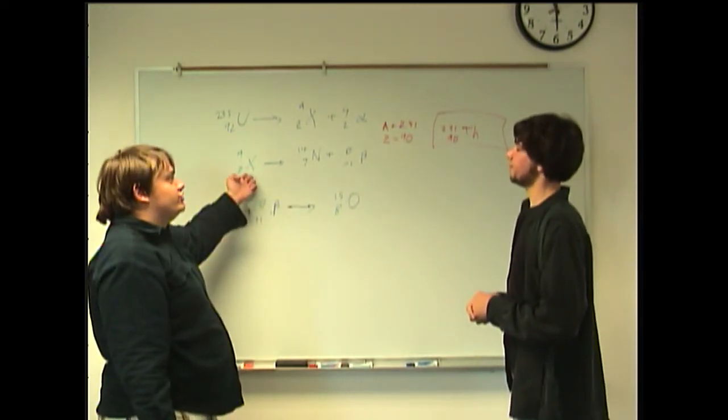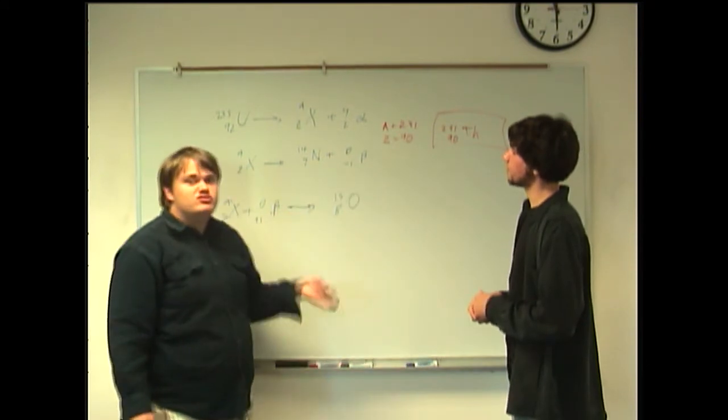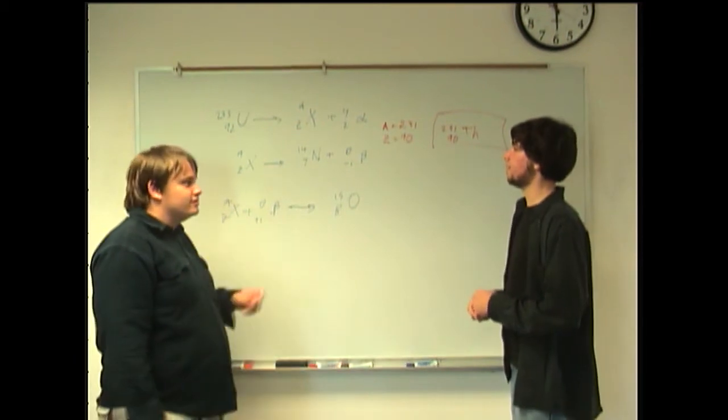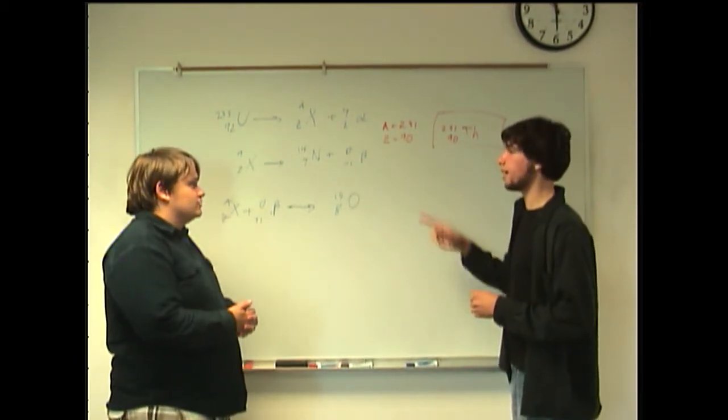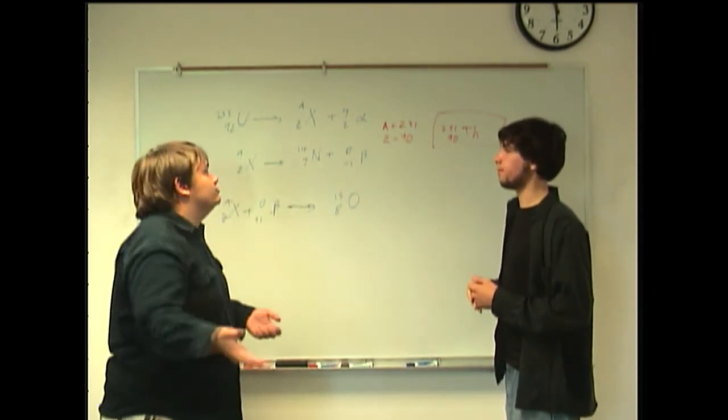We start with an unknown nucleus, and from here we can see it undergoes beta decay to get the nitrogen-14 nucleus. Okay, let's see. So, now what is beta decay again? I forgot. Beta decay is when you essentially lose an electron from the nucleus.